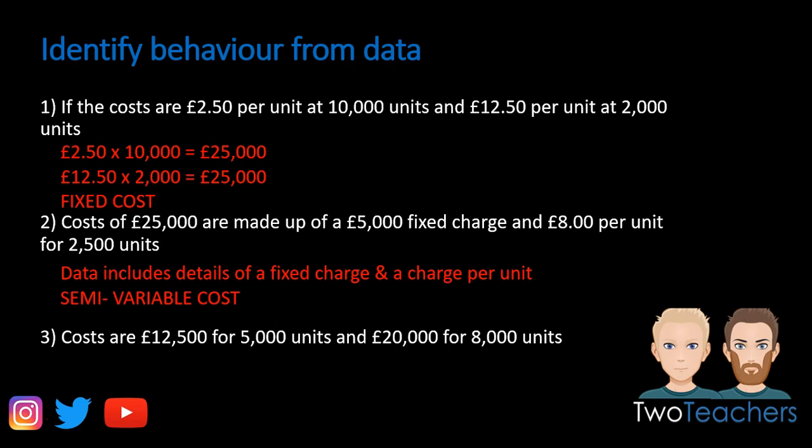Question 2 provides details of both fixed and variable costs within the information itself. The costs of £25,000 are made up of a £5,000 fixed charge — that's your fixed cost — and then there is also £8 per unit, which is the variable element. Without any further calculations you can see there is a fixed amount and a variable amount, therefore it is a semi-variable cost.